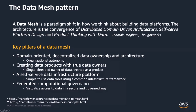The second pillar is creating data products with true data owners — having a single-threaded owner for data and treating data as a product. Rather than saying 'I want to use the data,' you say 'I want to make the data usable for others.' That means ensuring data quality, proper structure, right documentation so people understand what the data is and how to use it, and making the data discoverable and understandable. You need a department that owns that.